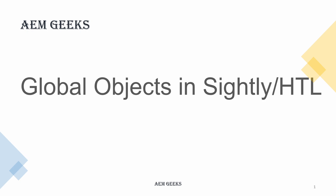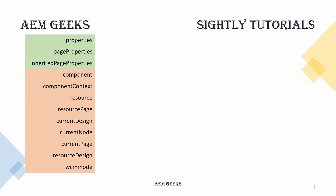In this tutorial I will discuss global objects available in Sightly. You don't need to inject these objects — they are by default available in your Sightly script. There are two types of objects: the first three shown in green are enumerable objects that provide a value map containing information you can access, and the ones shown in red are Java-backed objects that have specific information in them.